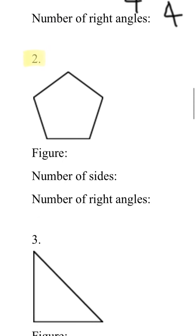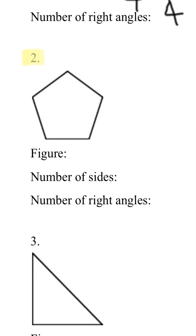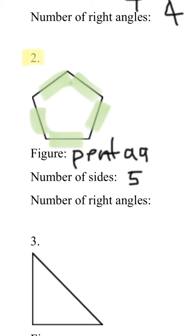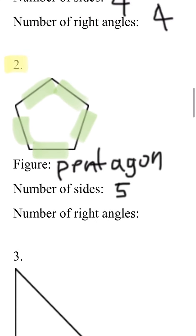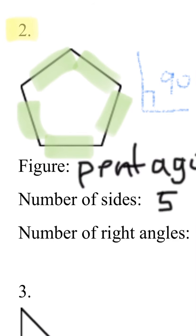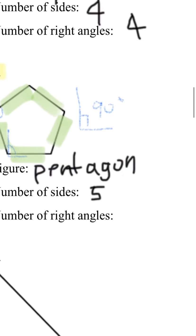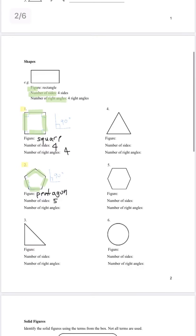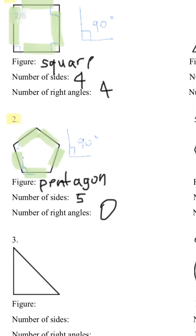Let's look at number two. Can you guys guess what it is? It has one, two, three, four, five sides, so it must be a pentagon. And how many right angles does it have? Does it form any 90 degree angles? No, it doesn't — the angles are larger than 90 degrees, they're obtuse angles. So there are zero right angles.